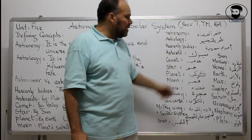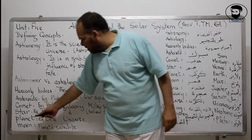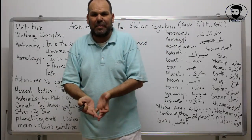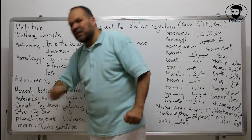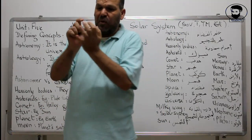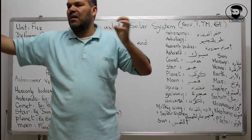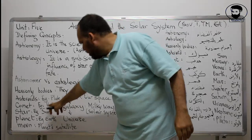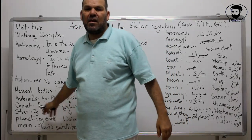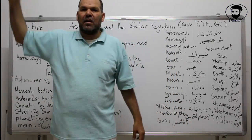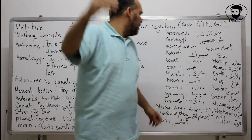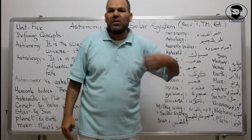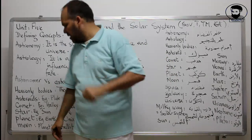So these are what we call the heavenly bodies. A comet is a small rock which has got a tail. For example, the Hale Comet, which sometimes comes near Earth. The comet is a well-known heavenly body, and Hale's Comet is an example of a comet.